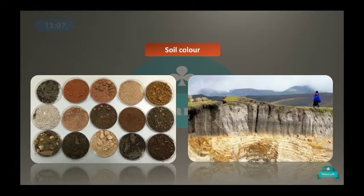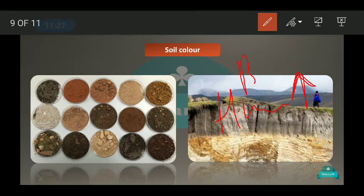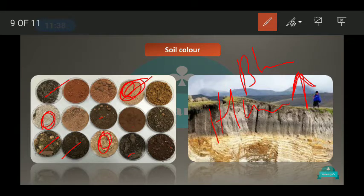Next is soil color. Depending upon the texture, type, particles, and minerals present in the soil, the color changes. Soil rich in humus appears dark. When iron minerals are present, the soil appears red. Clay soil has its own characteristic color based on its composition.